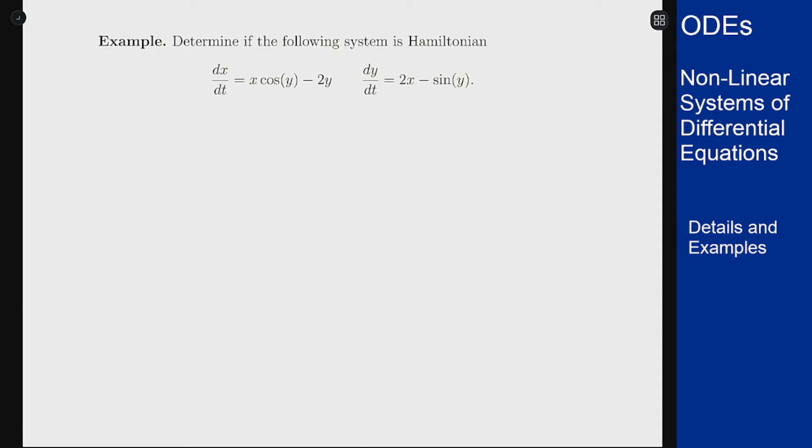In this video we'll look at an example of determining if a system of differential equations is Hamiltonian. So we have our system here: dx/dt is x cosine y minus 2y, and dy/dt is 2x minus sine of y, and we want to look at if this system is Hamiltonian.